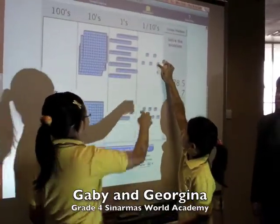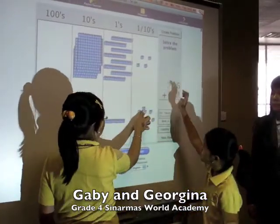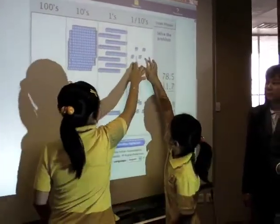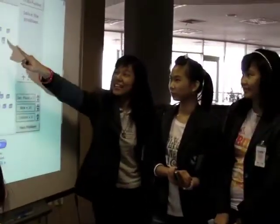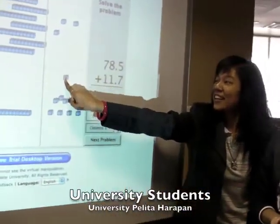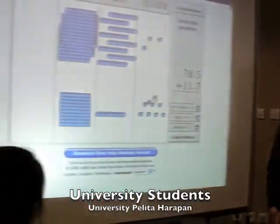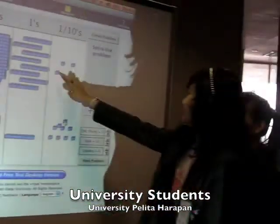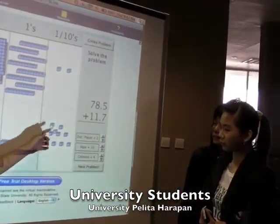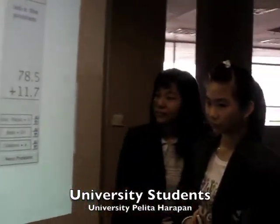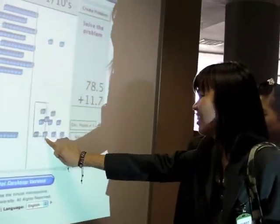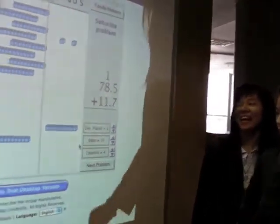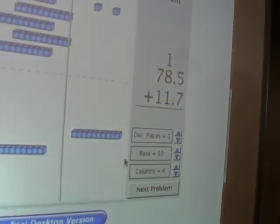So it is already more than 10. Maybe you can ask one of the UPH students to drag. And it becomes 10. So we can group it to become the ones. Who can do the grouping UPH? Well done.